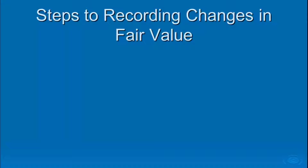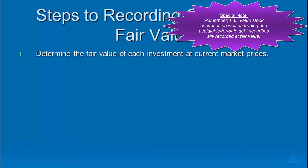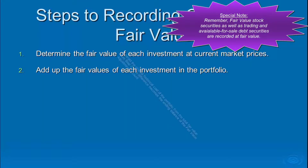Once it's in your portfolio, you start doing journal entries to record the fair value. Here are our steps. Number one: determine the fair value of each investment at its current market price. Two: add up the fair values of each investment in the portfolio to get a total portfolio value. Then, step three, compare that with the original historical cost — subtract the original historical cost from the total fair value. The difference becomes the ending balance in our fair value adjustment account.